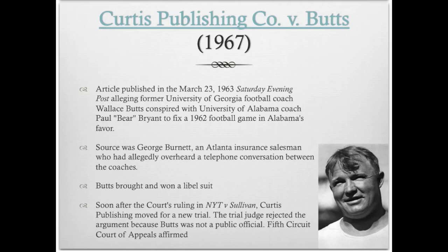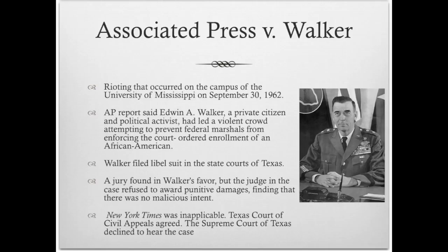The next case comes just a few years later, 1967, which is Curtis Publishing versus Butts. The Saturday Evening Post, published by Curtis Publishing, ran an article saying that Wally Butts conspired with Bear Bryant to fix a football game in Alabama's favor in 1962. The source was identified as George Burnett, an Atlanta insurance businessman, who said he'd overheard this conversation. Butts brought a libel suit and won, but this was not long after New York Times versus Sullivan, so Curtis moved forward for a new trial, claiming they should be applying the actual malice statute from Sullivan. But the trial court said no — Butts is not a public official. They appealed to the Fifth Circuit, which affirmed, and so they took it to the Supreme Court.